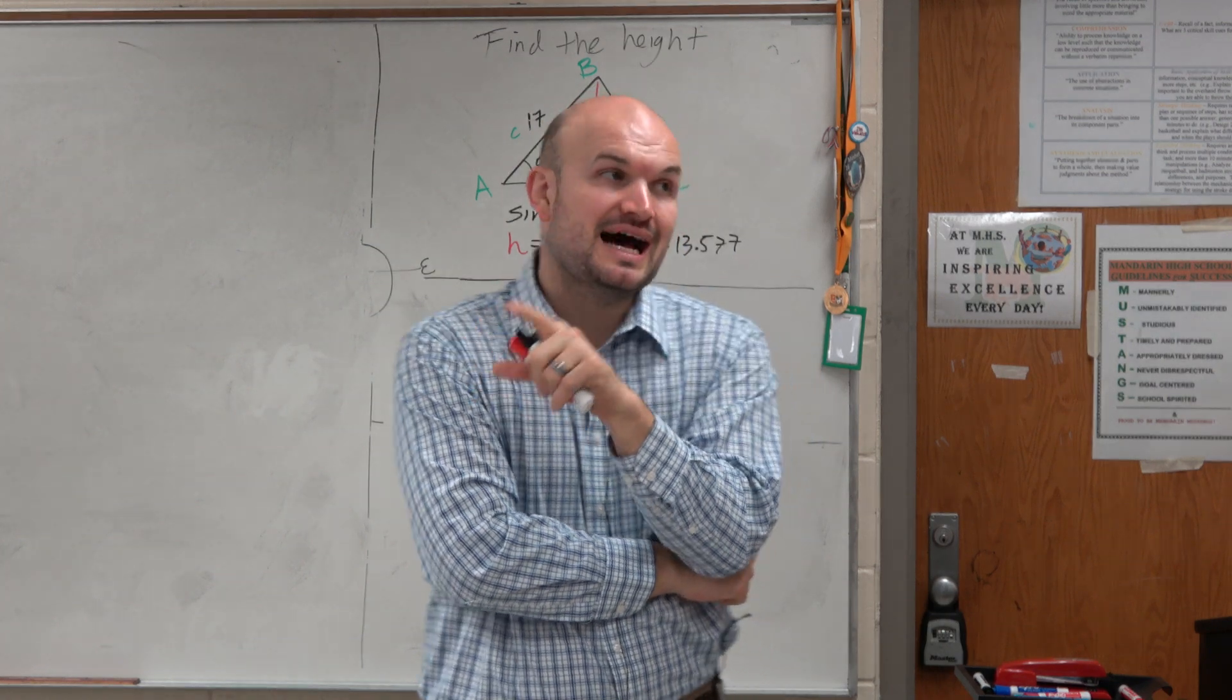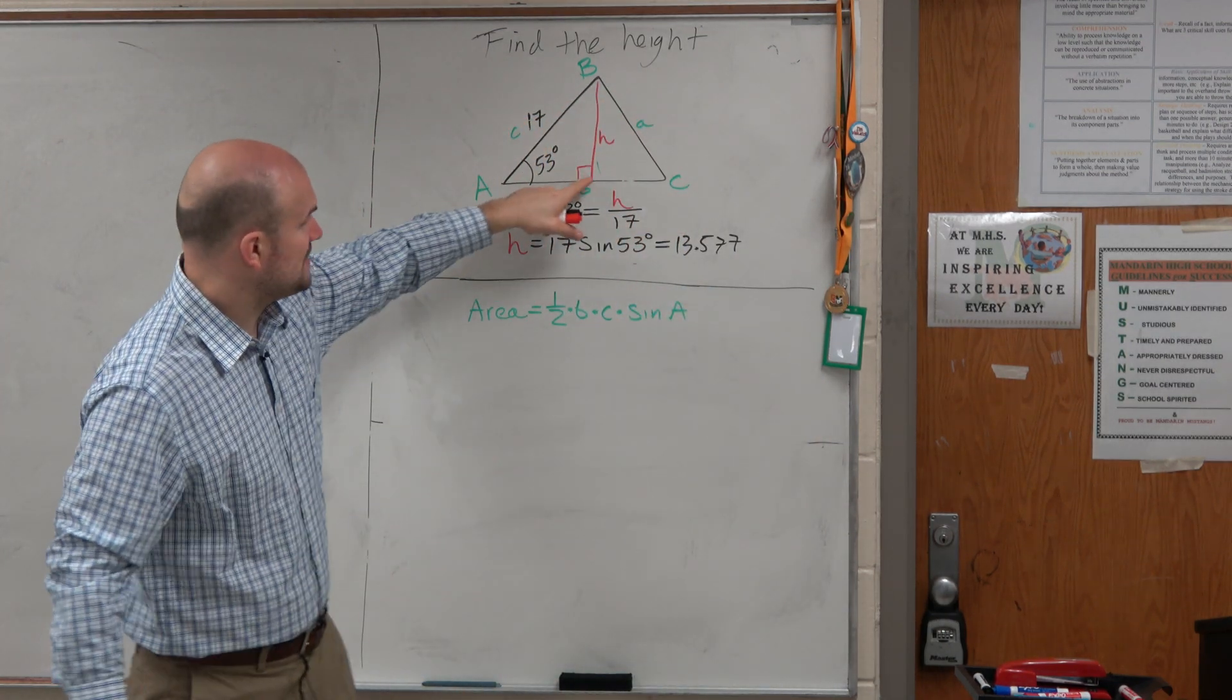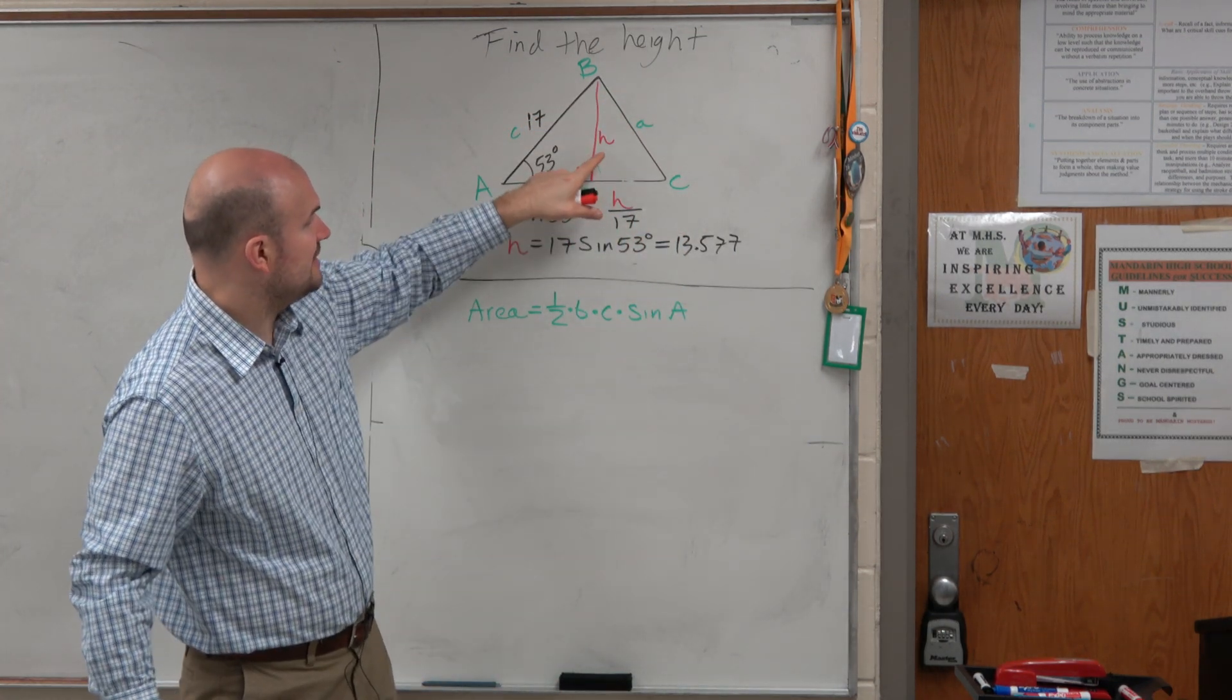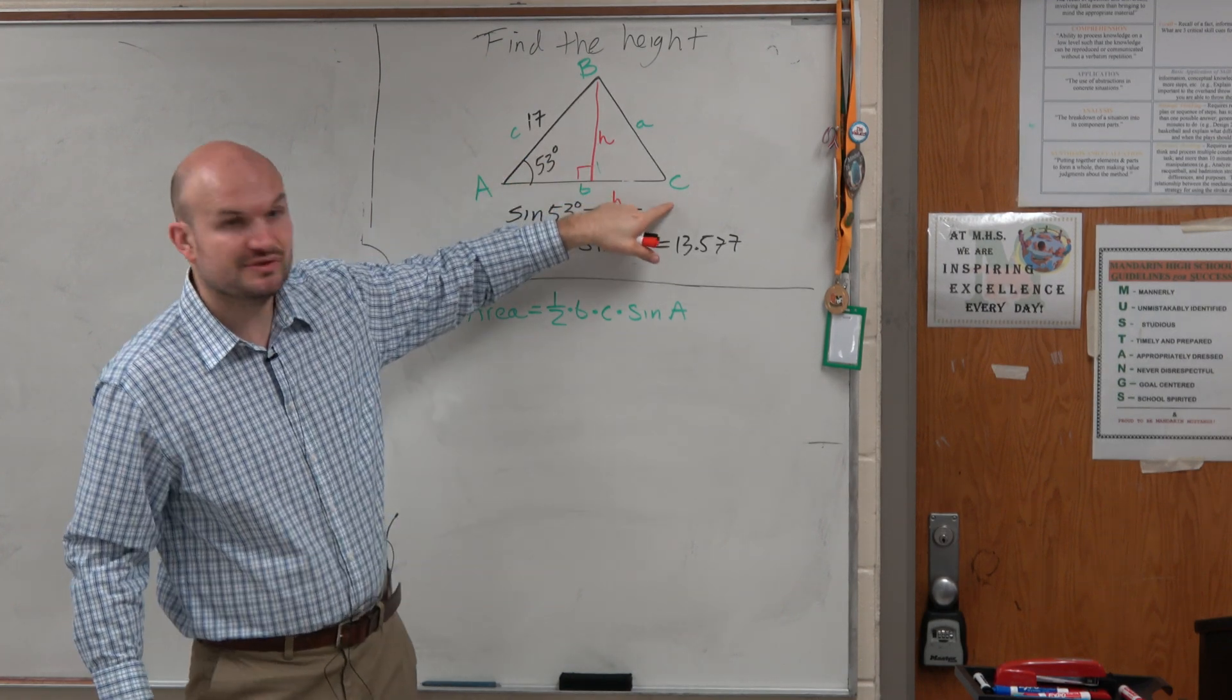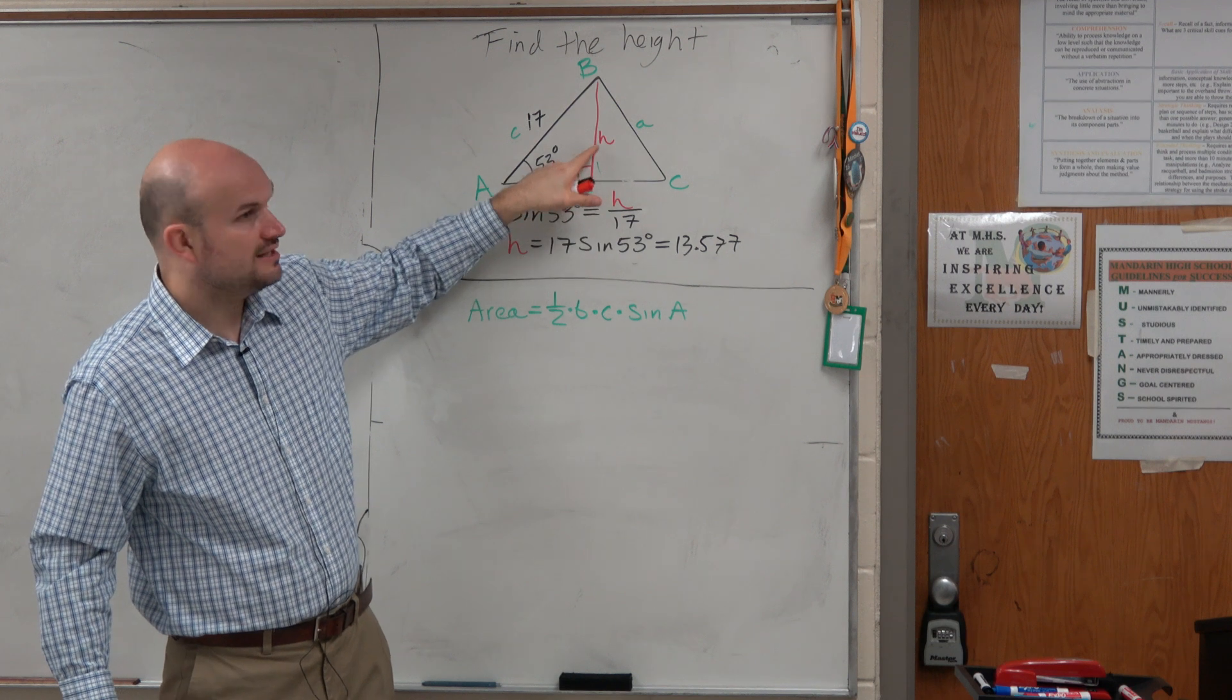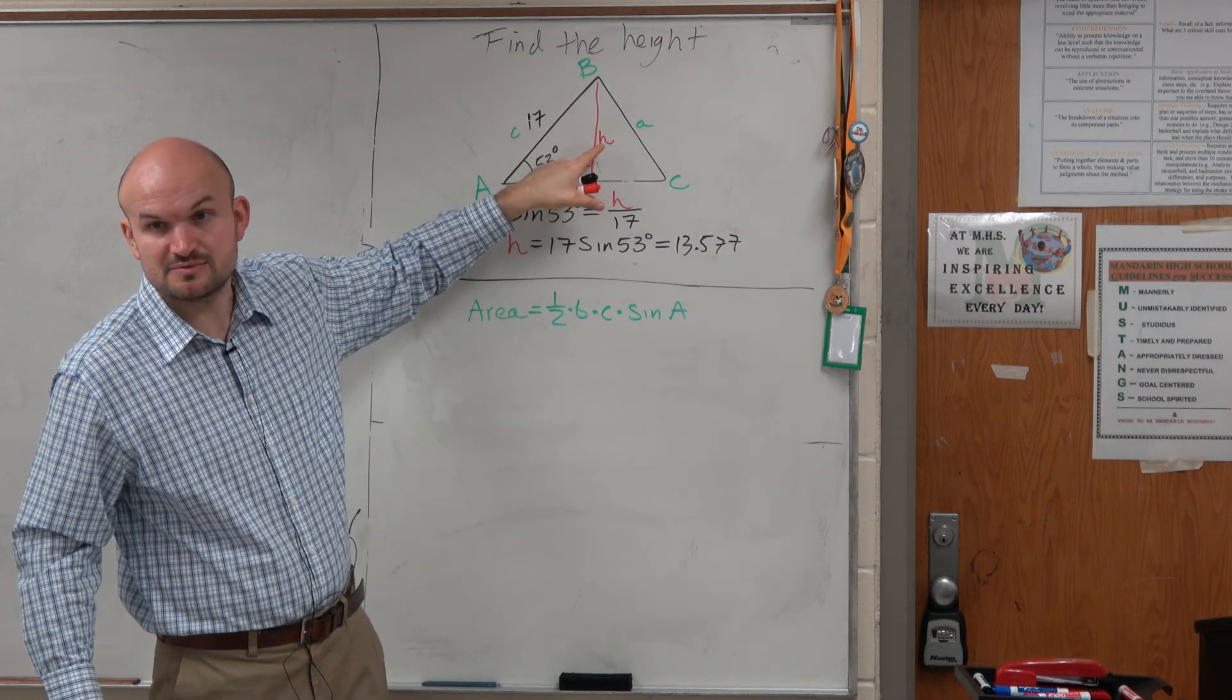We used the sine of A because we had this height here. We used the sine of A because we could, because we had h. But couldn't we also do the sine of C? Couldn't we do a relationship of the sine of C since we know h as well?